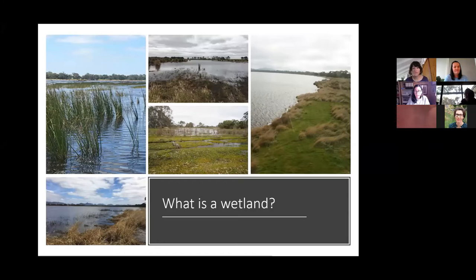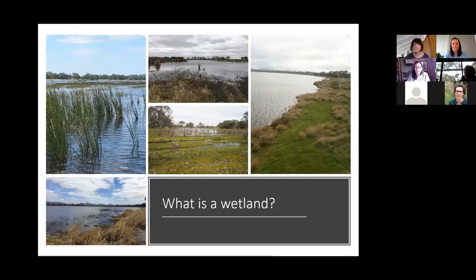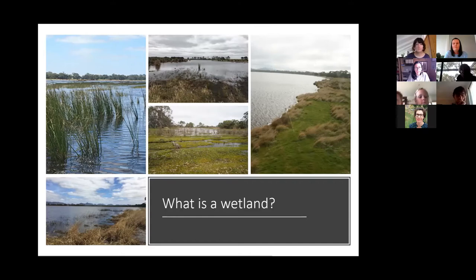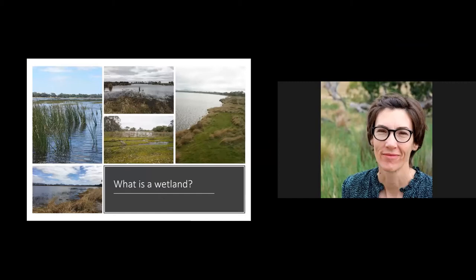I thought I'd start off by talking about what is a wetland. I kind of think a wetland is anything that's bigger than a puddle and smaller than a lake — so it could be a swamp, a bog, a fen, a marsh, a wet meadow. Usually a wetland is less than one meter deep, so if I'm standing in the middle of a wetland, my belly button will be dry.